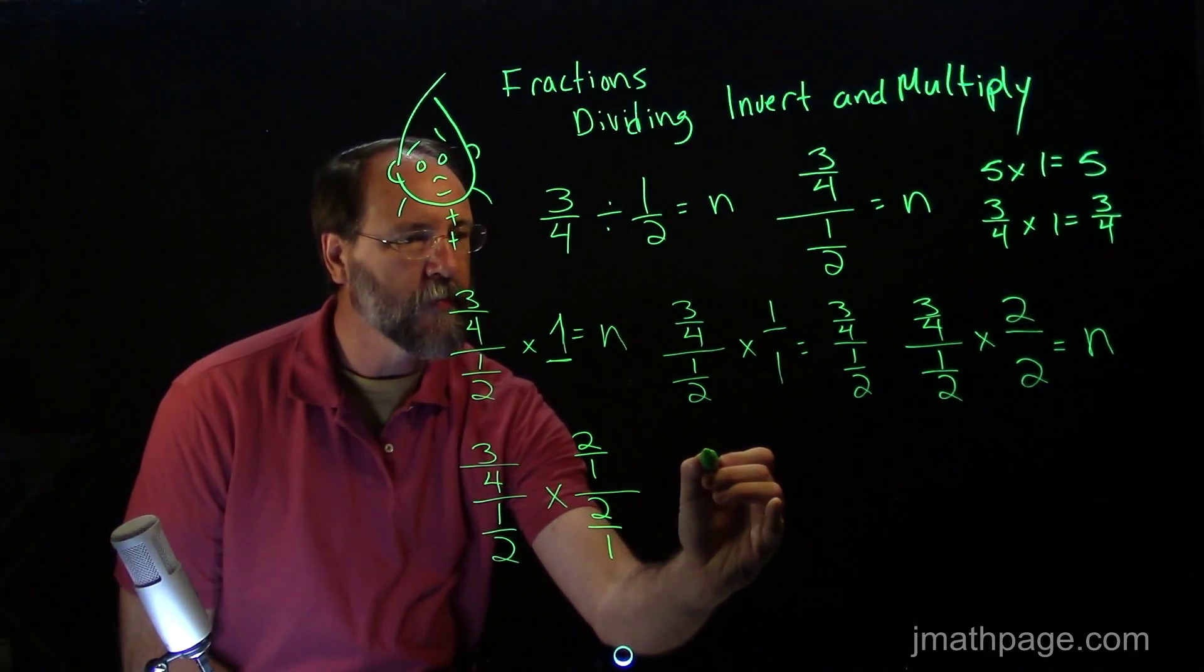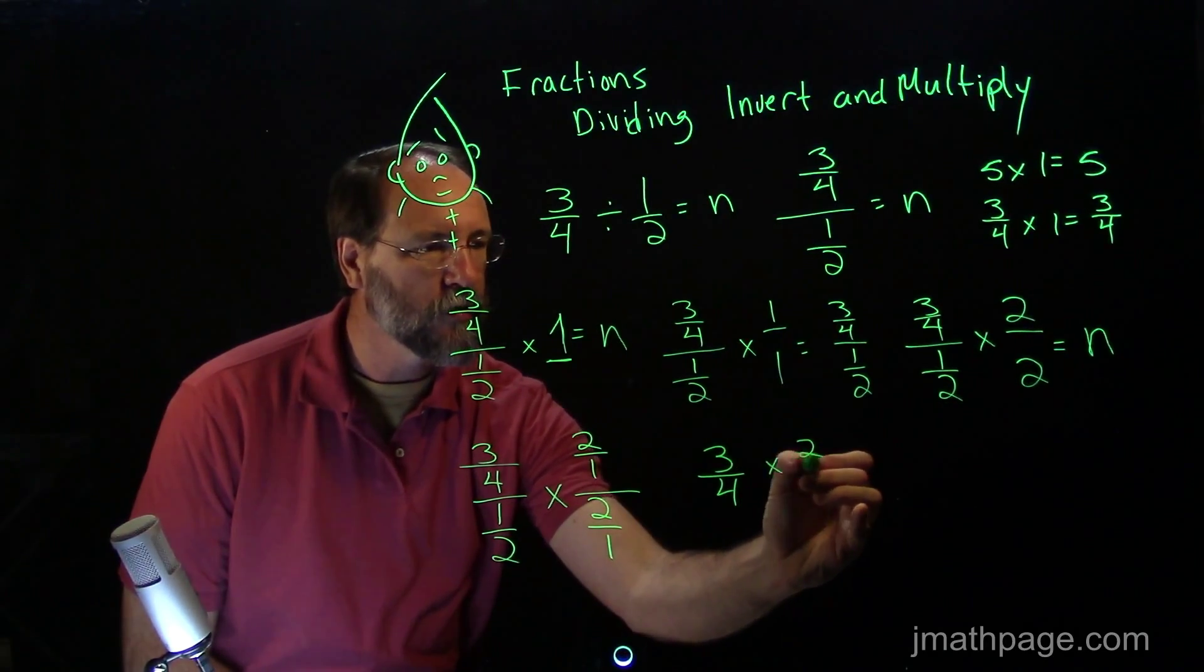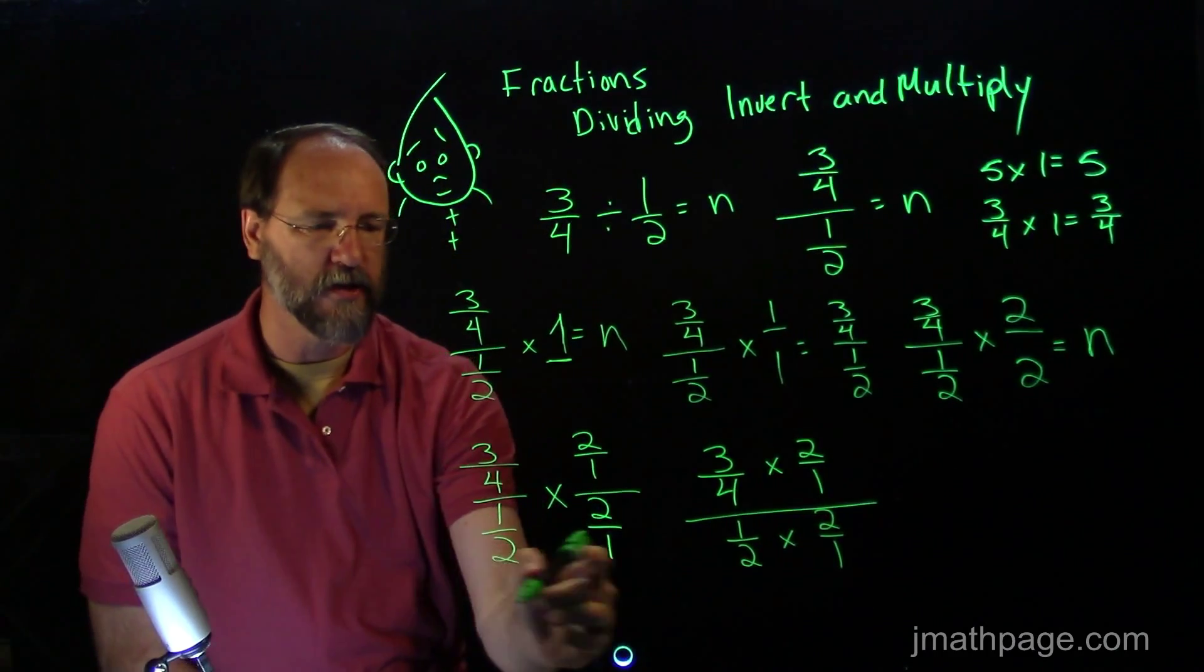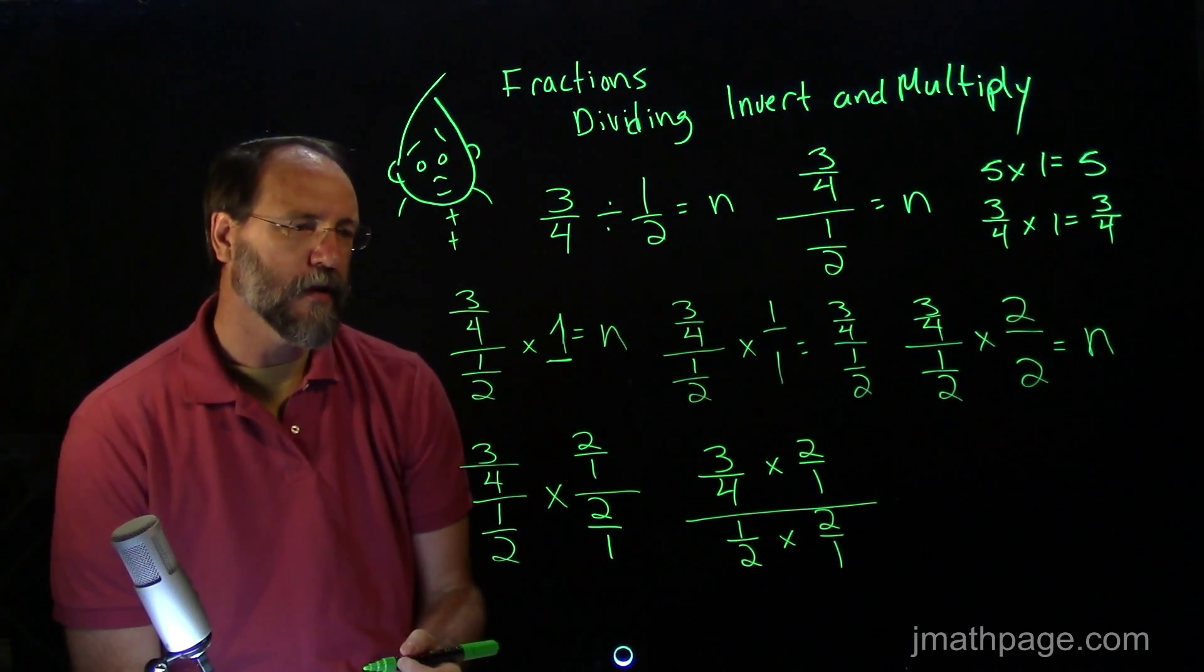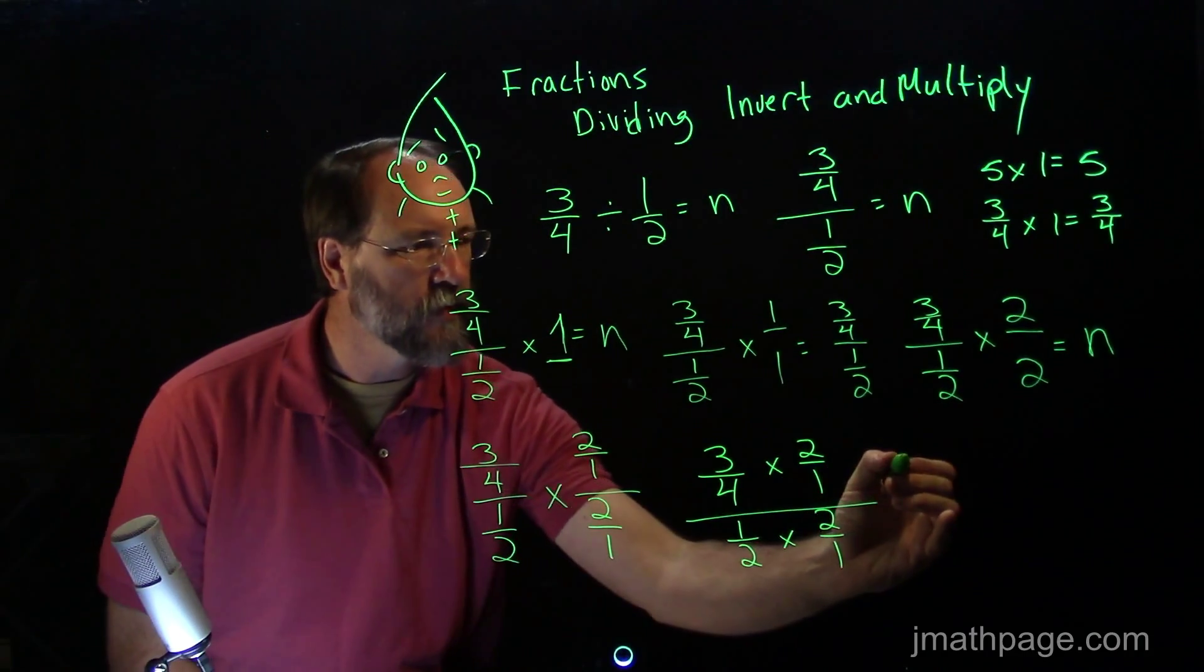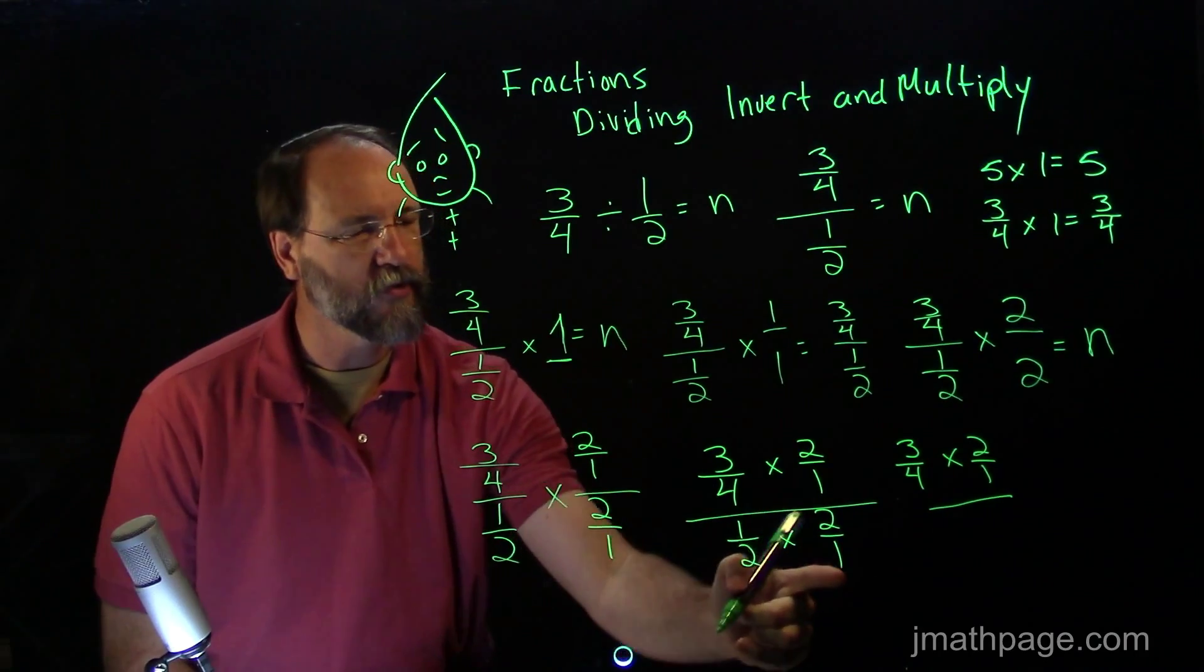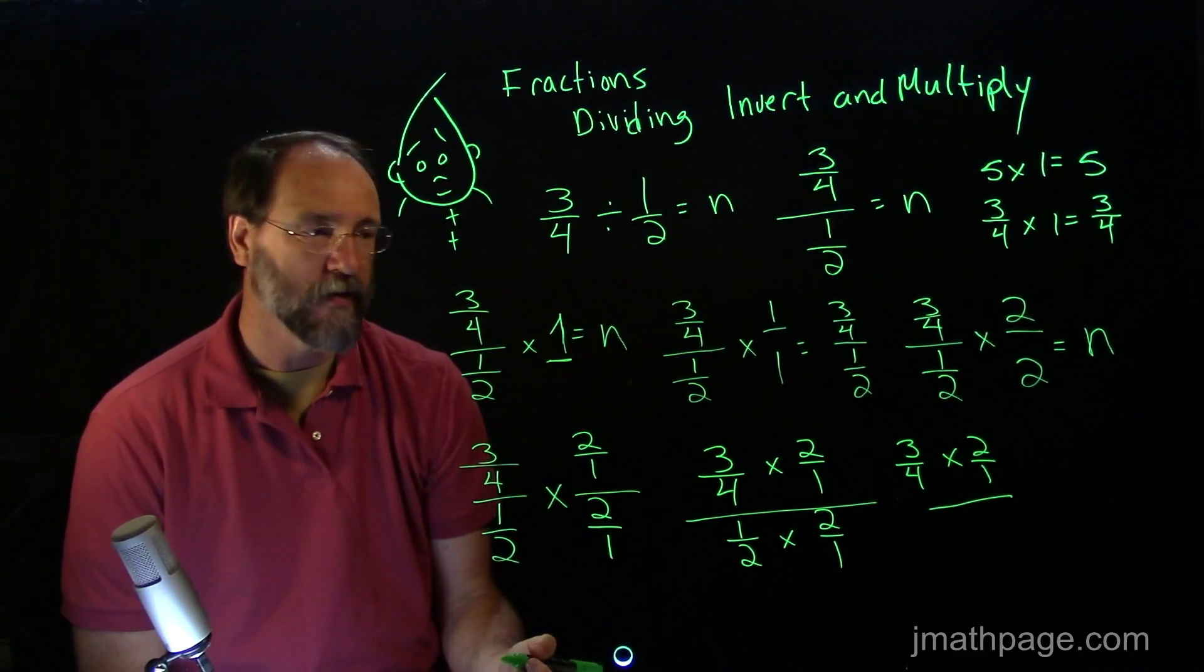So I'm going to rewrite this one more time. I'm going to write 3 fourths times 2 over 1 over 1 half times 2 over 1. So I just changed this statement here to this statement over here. Let's look at what happens here. Now if I continue, I get 3 fourths times 2 over 1 over 1 half times 2 over 1 is the same as saying take a half and double it. If you take half and double it, you get 1.